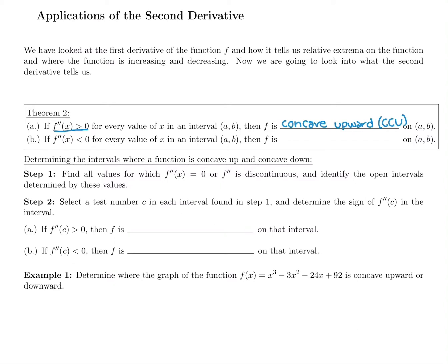If we draw some examples of what concave up looks like — that's when the second derivative is positive — it could be a full U shape, which is concave up. It could just be the left side of the U oriented upward, or just the right half of the U. So any part of that U shape is concave up: the full U, just the left half, or just the right half.